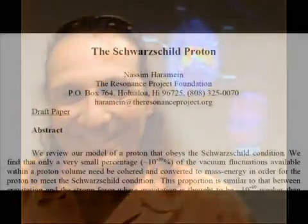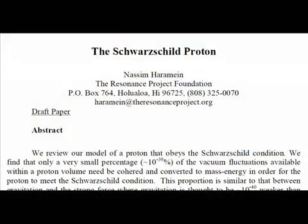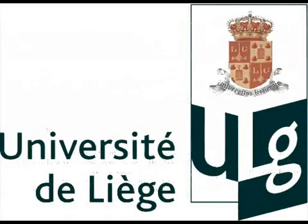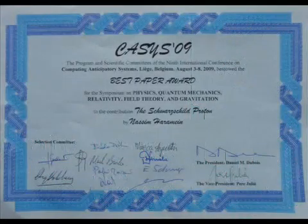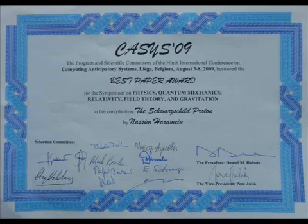I want to talk about Nassim Haramein's recent paper on the Schwarzschild proton, which was not only accepted but chosen by a panel of 11 peer reviewers at the University of Liege in Belgium to win the prestigious Best Paper Award in the field of physics, quantum mechanics, relativity, field theory, and gravitation.